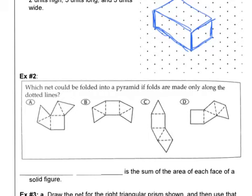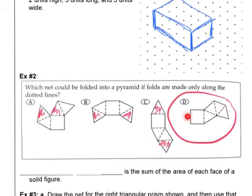So A doesn't work because these two parts end up overlapping. B doesn't work because these two parts end up overlapping. And C doesn't work because these two triangles end up overlapping. So D is the only one that works. When you fold these edges here, they line up with all the edges of the square, and it makes a square pyramid.